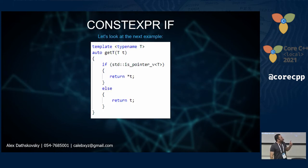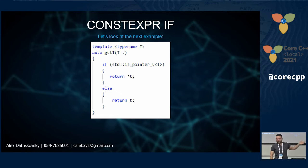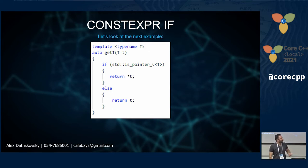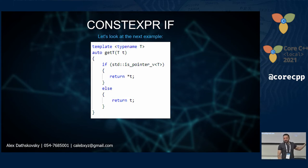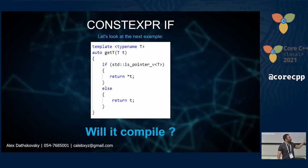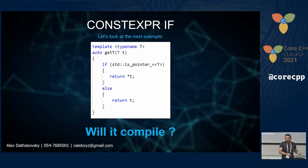Let's look at a template function that returns auto. Since C++14, you can return auto and the compiler deduces the type. You might be tempted to write: if the template parameter is a pointer, return a reference to the pointer; otherwise return the value directly. But this won't compile — the compiler cannot deduce what you want. Will it return a value? Is it a pointer? What should it do?